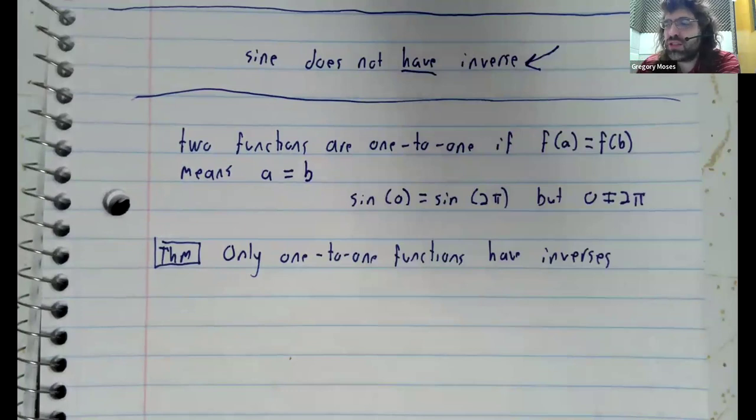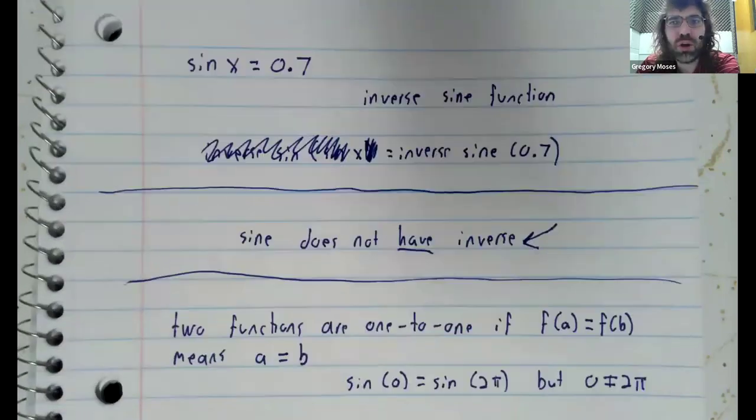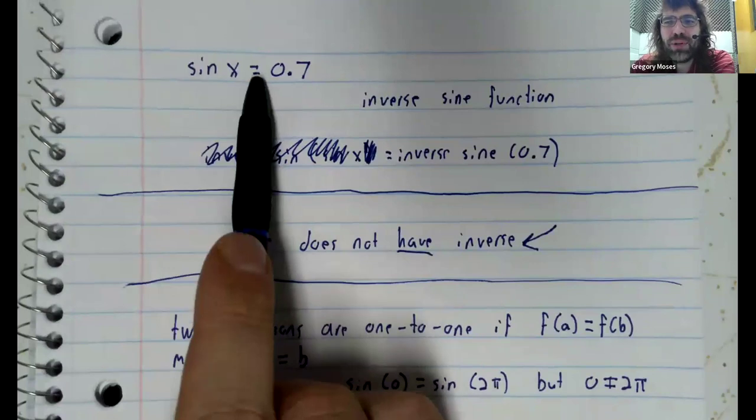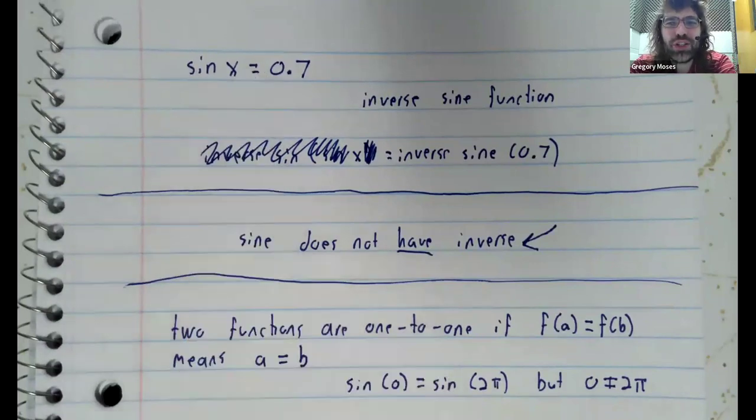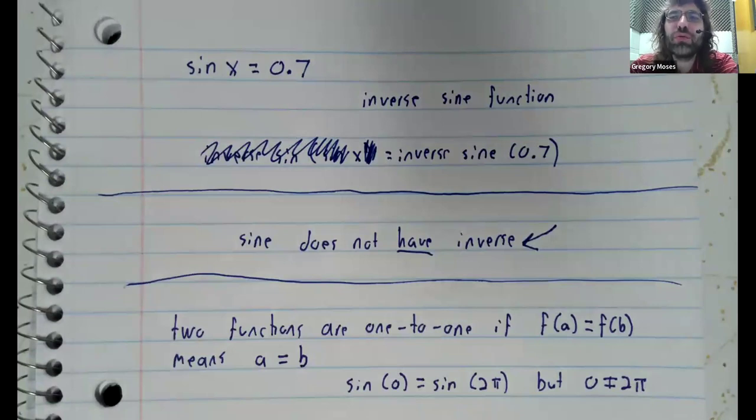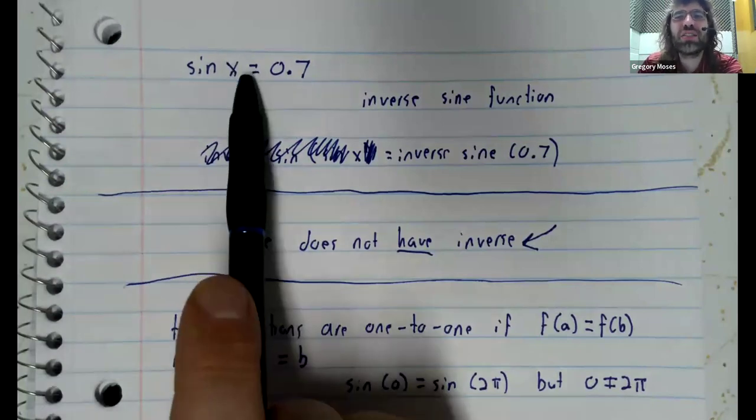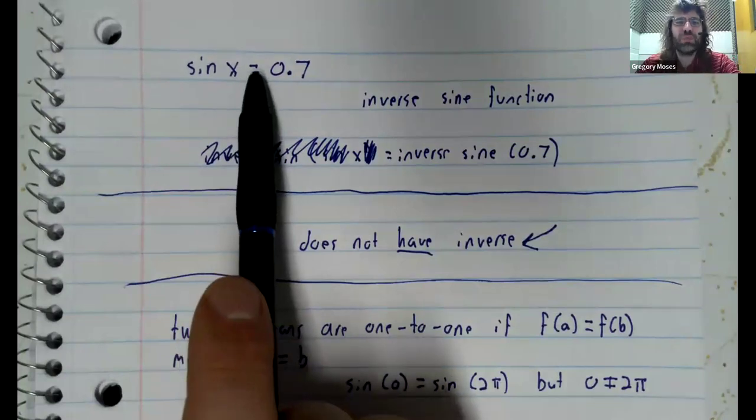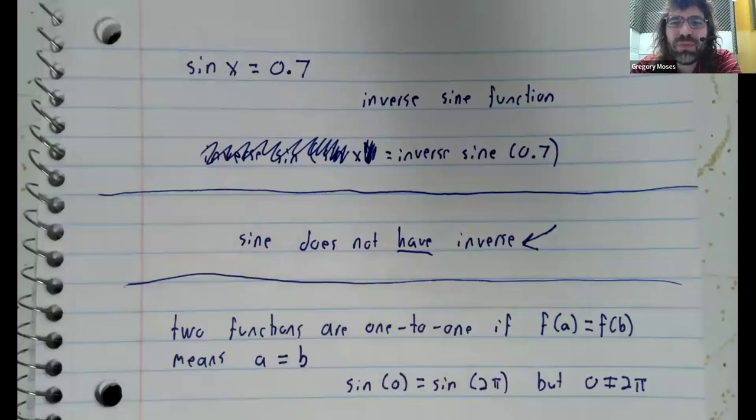So where does that leave us? Does it mean that we have to just give up and not solve equations like this? That would be a pretty sad situation to be in. And fortunately, the answer is no. We're going to present a trick, a way of using inverses to solve equations like this, even though the sine doesn't have an inverse. But as this video is already running on a bit, I will end it here, and we'll talk about our trick in the next video.